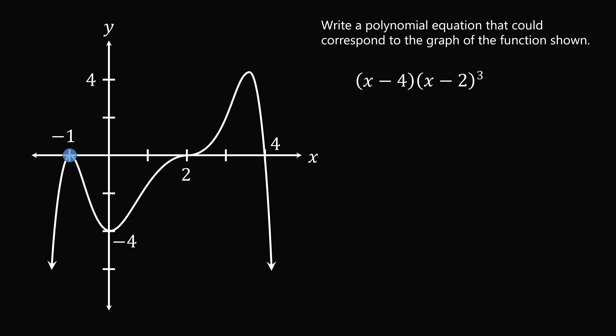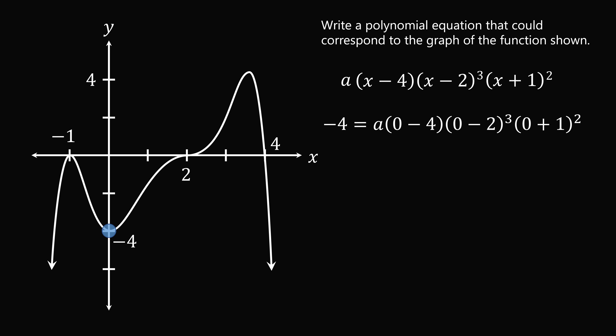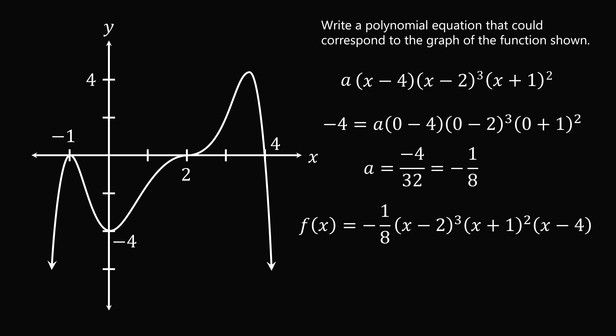We multiply all factors together with a scaling factor a, then use the y-intercept of negative 4. Setting y equals negative 4 and x equals 0 and substituting in, we solve for a and get a equals negative 4 over 32, which equals negative 1 over 8. So one polynomial equation that could correspond to the graph is f of x equals negative one-eighth times (x minus 2) cubed times (x plus 1) squared times (x minus 4).